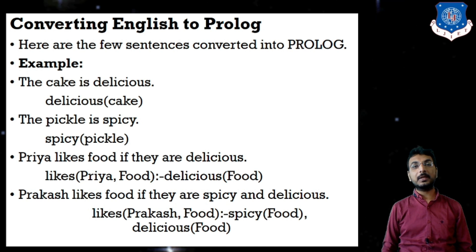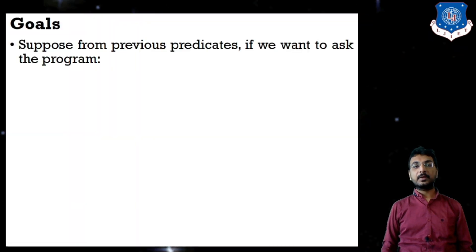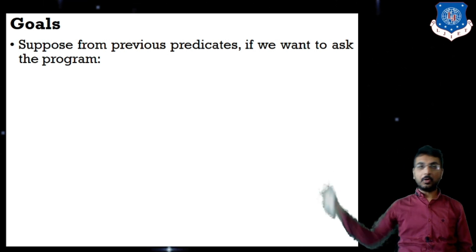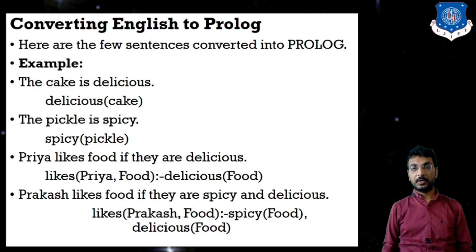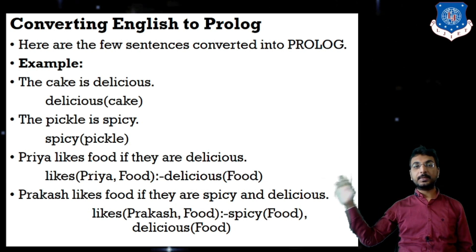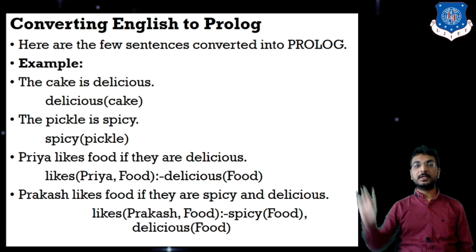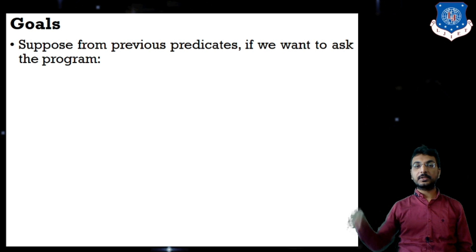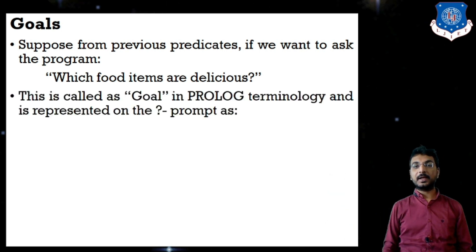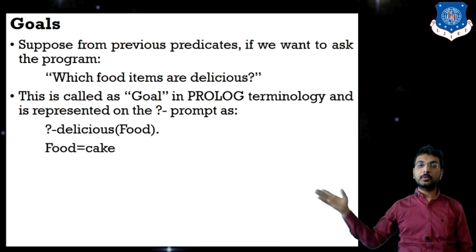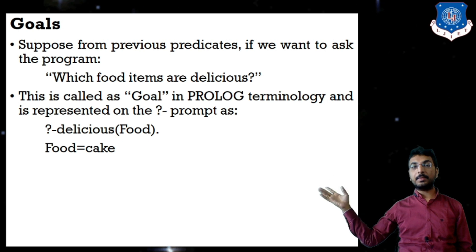So these are the statements showing how English is converted to Prolog predicates. Now let us start with the next concept: goals. Suppose from the previous predicates we want to ask the program which food items are delicious. We want to deduce from all these sentences that one specific noun satisfying the delicious predicate is cake. So the answer will be: food = cake.